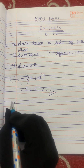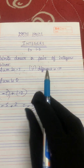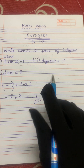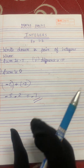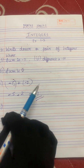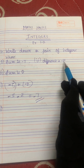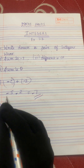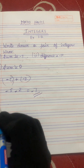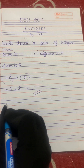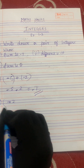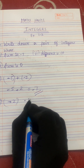Now let's solve the second question. They are telling us the difference is minus 10. So we have to get the answer minus 10. We have to take a pair of integers that if we calculate, we get minus 10. Difference means subtraction, sum means addition. So let's take minus 2 minus 8.